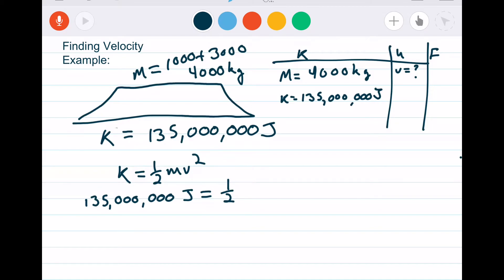Okay. So our equation is still the same: K equals ½mv². So we plug in our K of 135 million joules equals one half, our mass is 4,000, and we're looking for v². So half of 4,000 is 2,000, which equals 135 million. And we're going to divide both sides by 2,000.